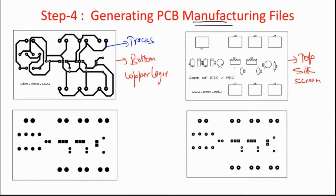The second file is the top silk screen layer, needed for printing legends, your brand name, your website, and the component outer boundaries for identification. This tells you where to place components — for example, D1 is a diode, C2 is a capacitor. The top silk screen layer is printed in white ink to give a finishing look.